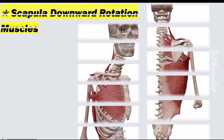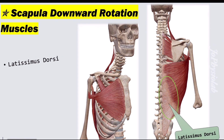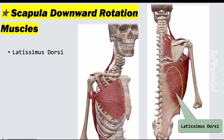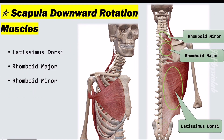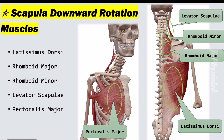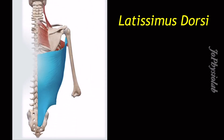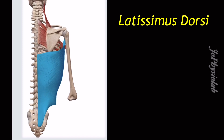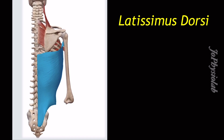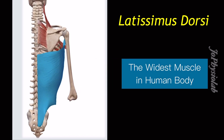There are six main muscles for downward rotation: latissimus dorsi, rhomboid major and minor, levator scapulae, and pectoralis major and minor. The latissimus dorsi, also known as the lats, is the widest muscle in the human body.